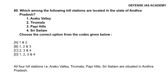Question 60: Which among the following hill stations are located in the state of Andhra Pradesh? Options: 1. Araku Valley, 2. Tirumala, 3. Papikondalu Hills, 4. Srisailam. The correct answer is option D, 1, 2, 3 and 4. All four hill stations — Araku Valley, Tirumala, Papikondalu Hills and Srisailam — are situated in Andhra Pradesh.